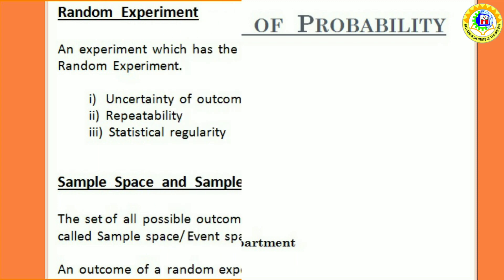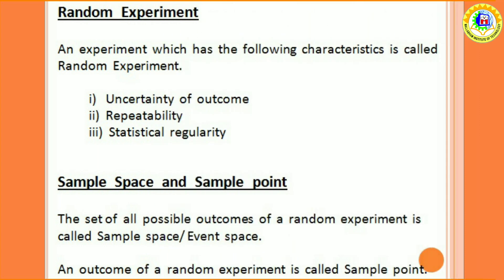First we have to know what is random experiment. An experiment which has the following characteristics is called random experiment. First is uncertainty of outcome. The outcome or result is not fixed, it is uncertain. That is, it cannot be predicted from the beginning of the experiment.